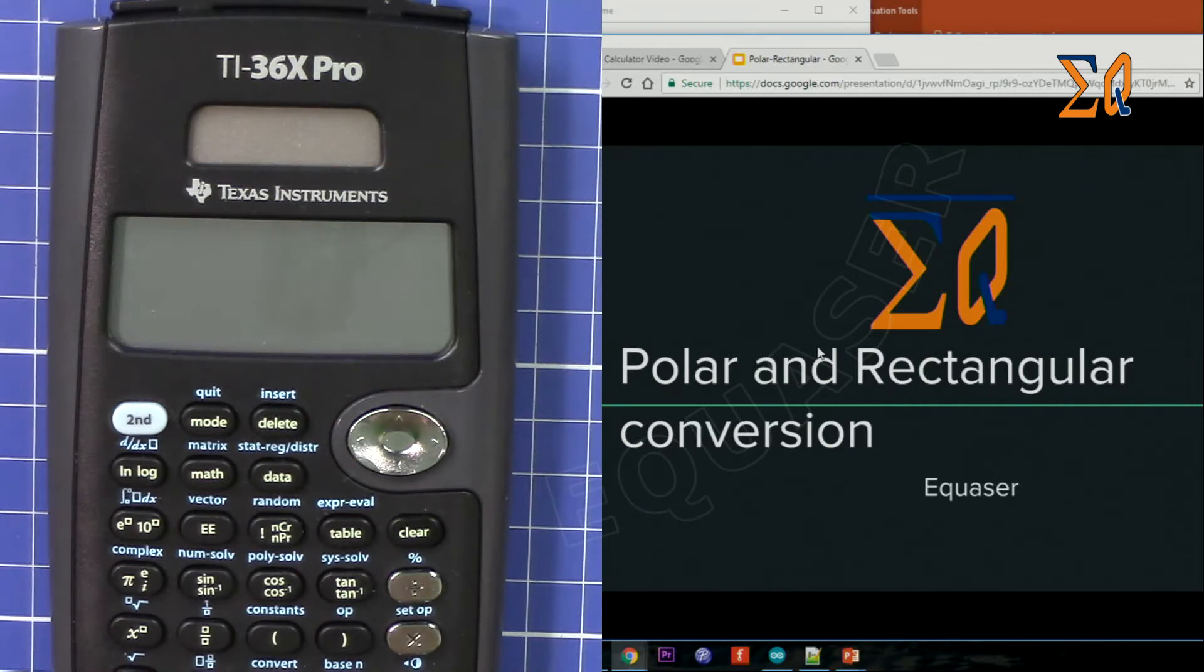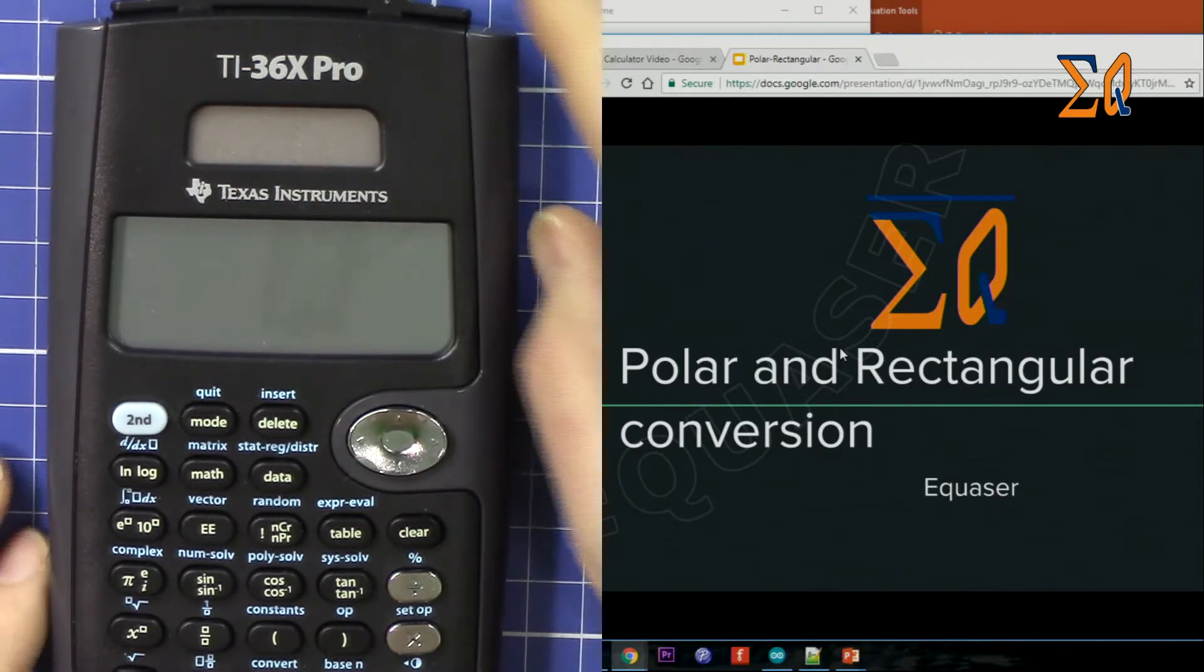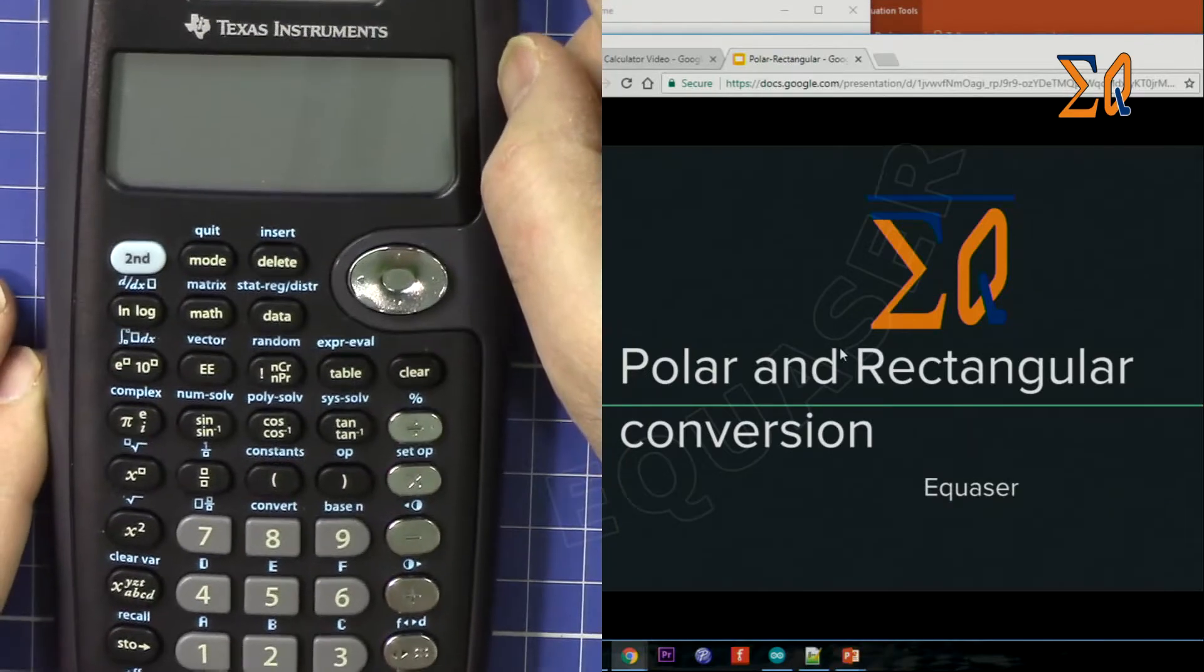Hi, welcome to Equasor. In this video I'm going to show you how you can convert polar and rectangular, which is sometimes called Cartesian coordinates, one to the other using this Texas Instruments 36X PRO calculator. So let's get started.